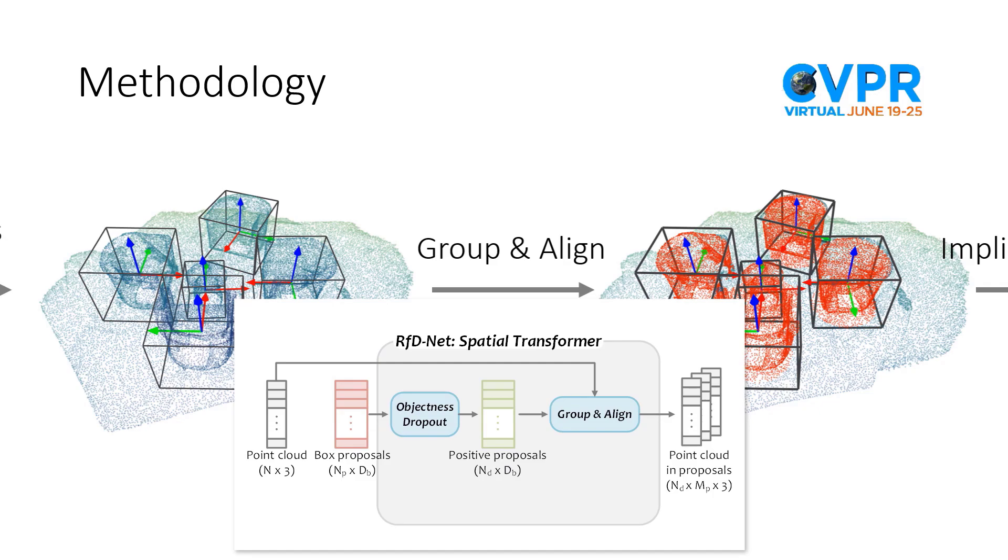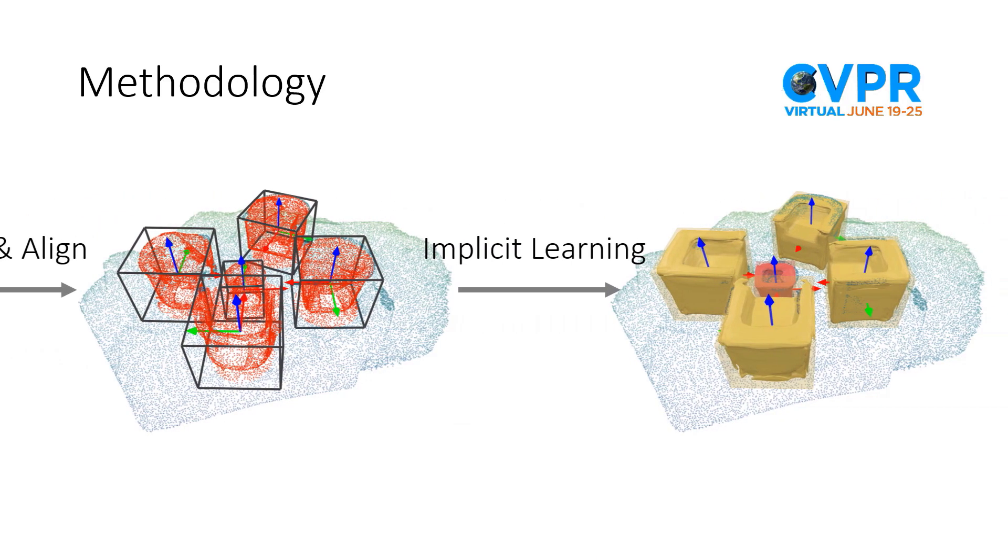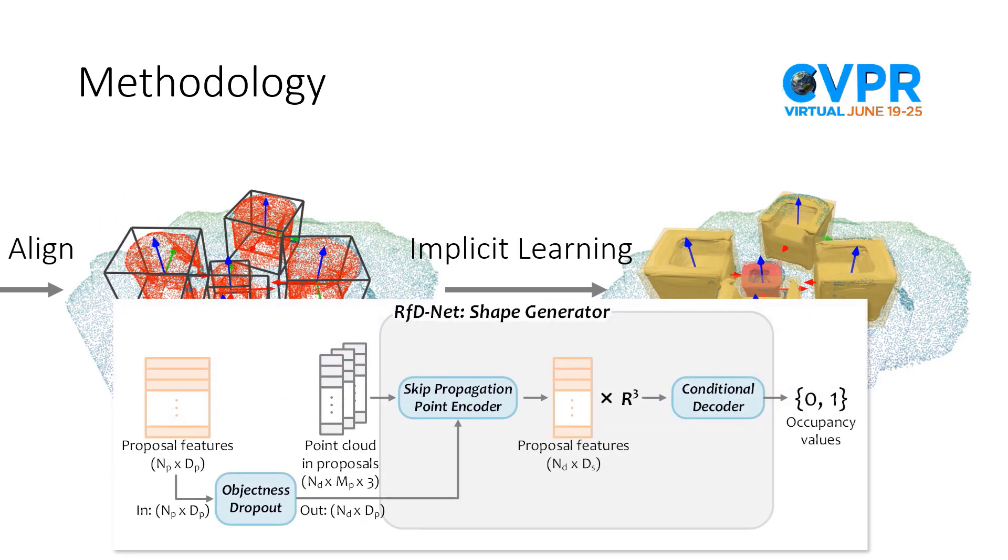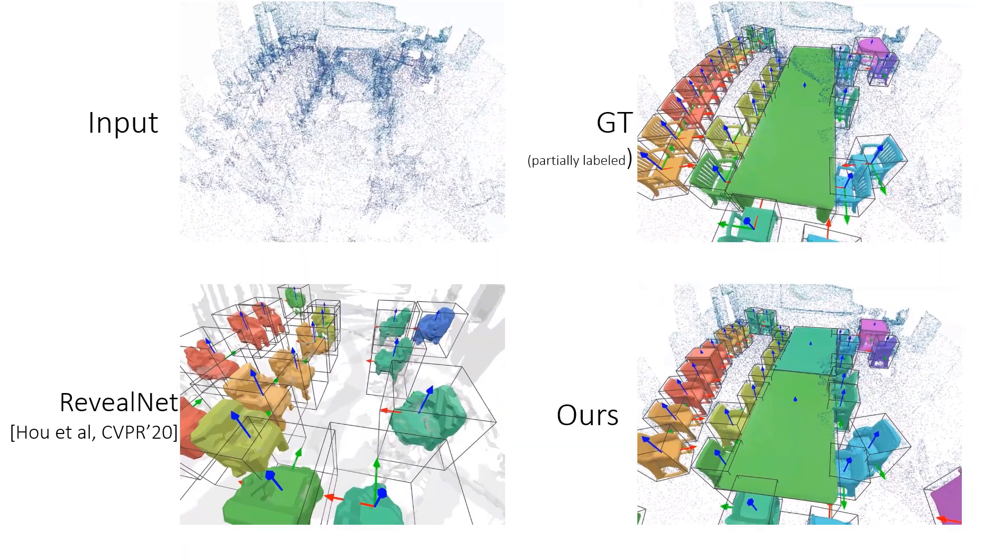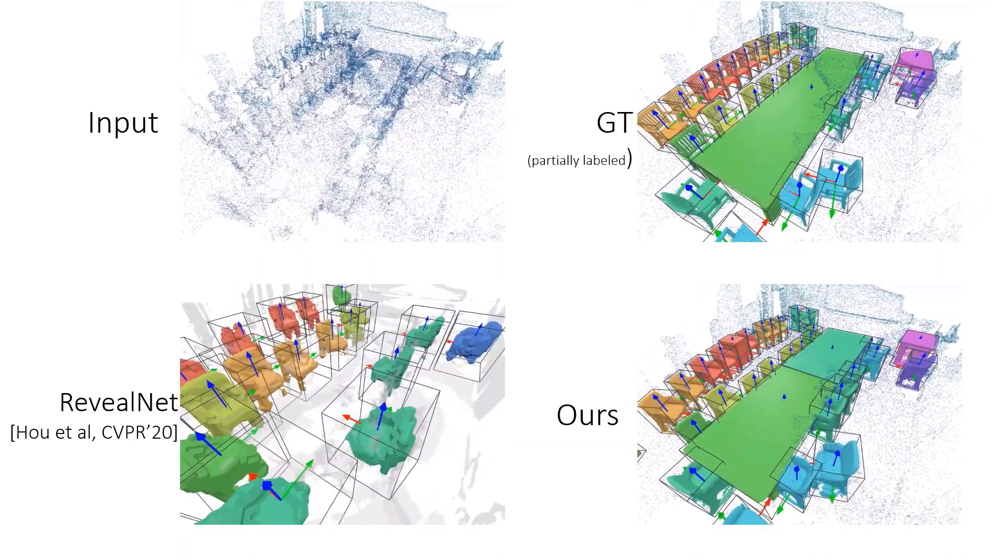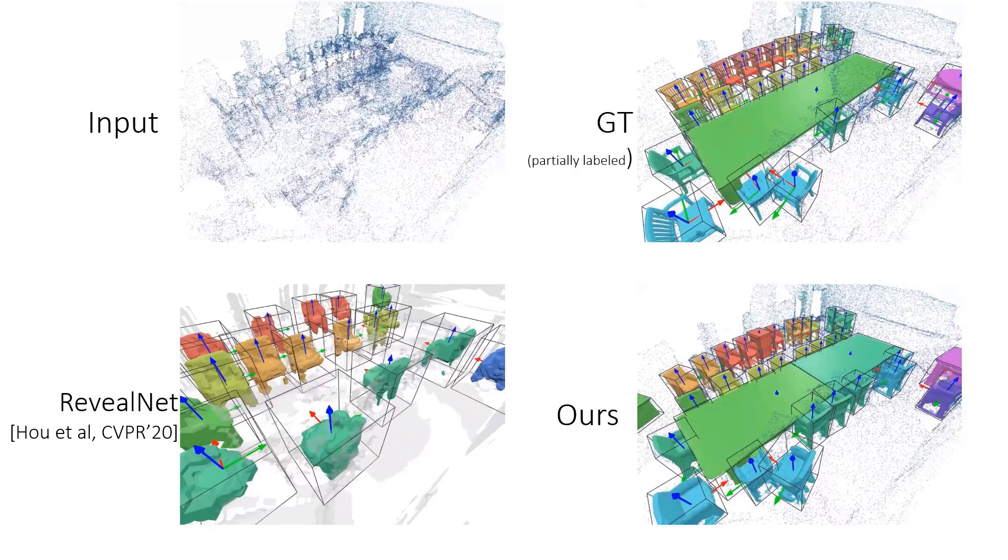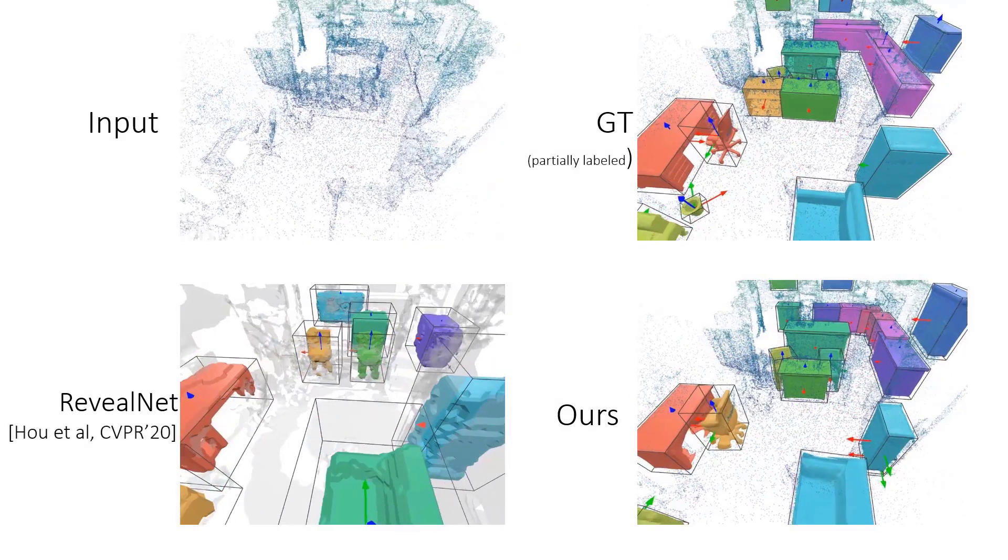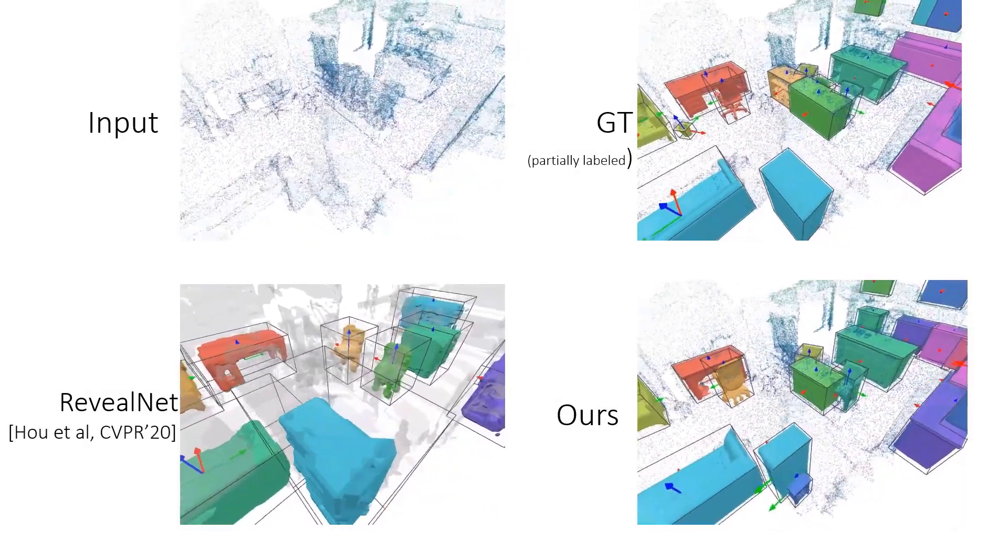The 3D points close to these positive proposals are grouped and aligned, which support implicit learning to recover shapes with high resolution. From the result, we can see that our method can produce high-quality mesh points with plausible object poses comparing with the state of the art.